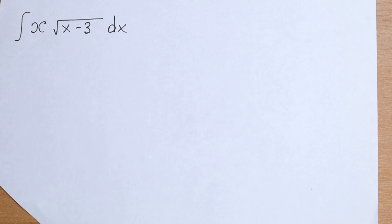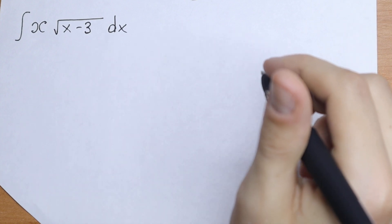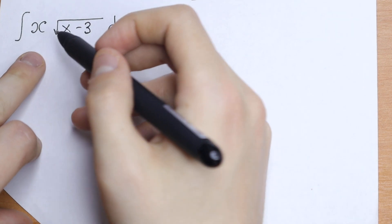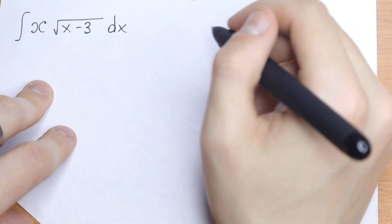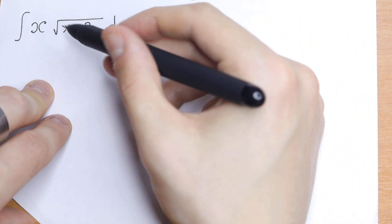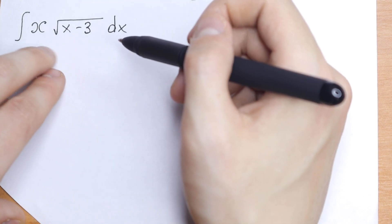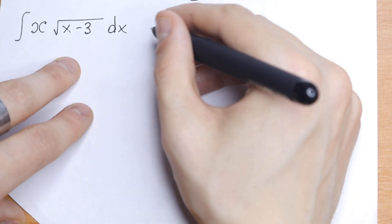Hello everyone, welcome back to Higher Mathematics. Today we have an interesting integral: the integral of x times the square root of x minus 3. This integral is tricky because we have a product — we have x and we have our square root.